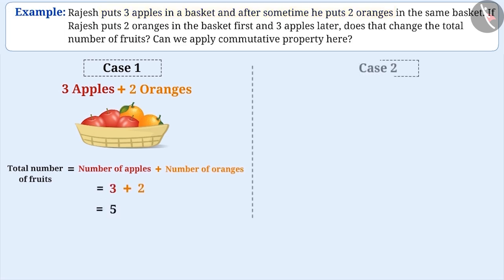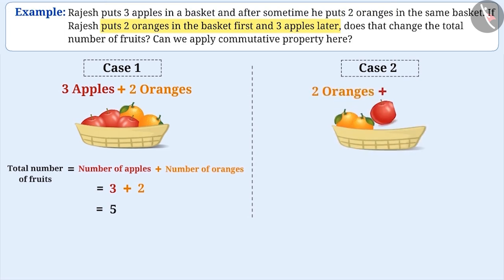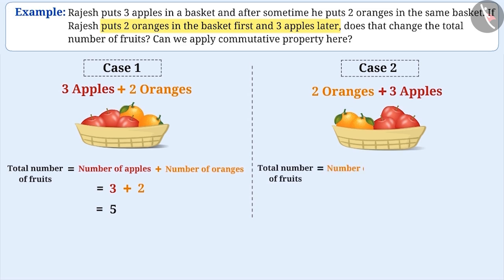Case 2: Keeping two oranges first and later three apples in the basket. Total number of fruits equals number of oranges plus number of apples, which is two plus three, that is five.